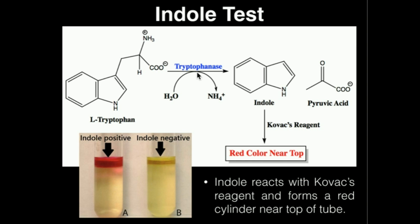As long as tryptophanase is present, tryptophan will be hydrolyzed into ammonia, indole, and pyruvic acid, and Kovacs reagent can react with indole to produce a red color near the top of the tube. If we don't see a red color — if we see a yellowish color near the top — that means the test is negative for indole, and therefore tryptophanase is not expressed by those bacteria.